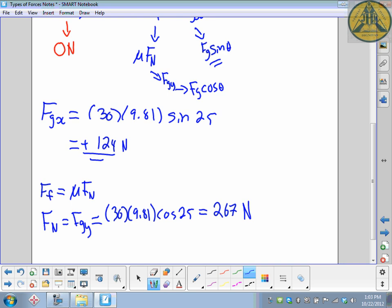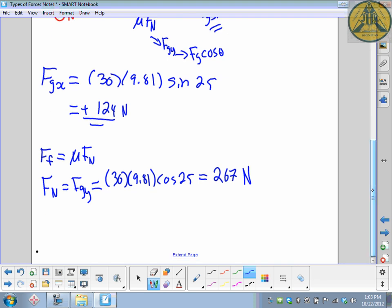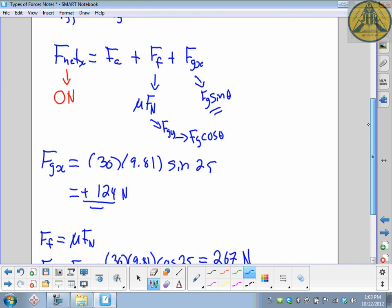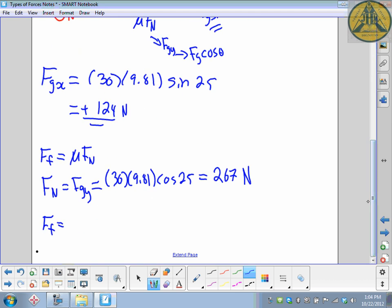To finish calculating the force of friction: the coefficient is 0.12 times our 267. That gives us our magnitude of force of friction, which is 32 newtons. I'm leaving that as positive because that is also down the ramp. I said down the ramp is the positive direction. Now we're ready to finish the problem.